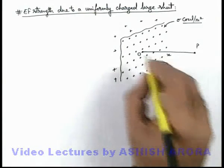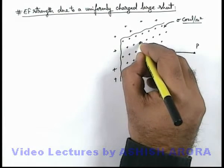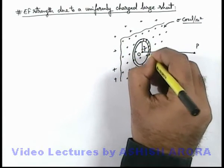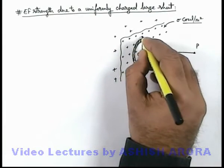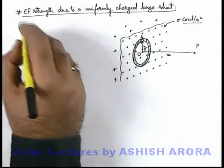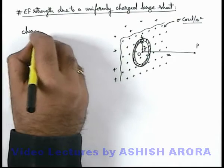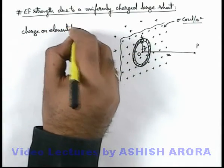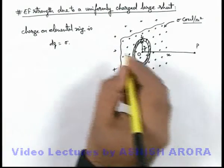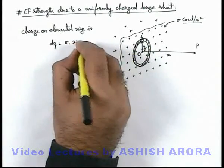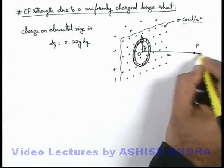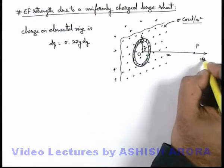To analyze this situation, we consider a small elemental ring of radius y and width dy on this sheet. We have taken a ring element because we know the electric field strength due to a ring at an axial point. For this ring, the charge on the elemental ring is dq, and the value of dq will be sigma multiplied by the area occupied by the element: 2πy·dy, that is circumference multiplied by its width. Due to this dq, the electric field at point P will be along the axis, and this can be taken as dE.